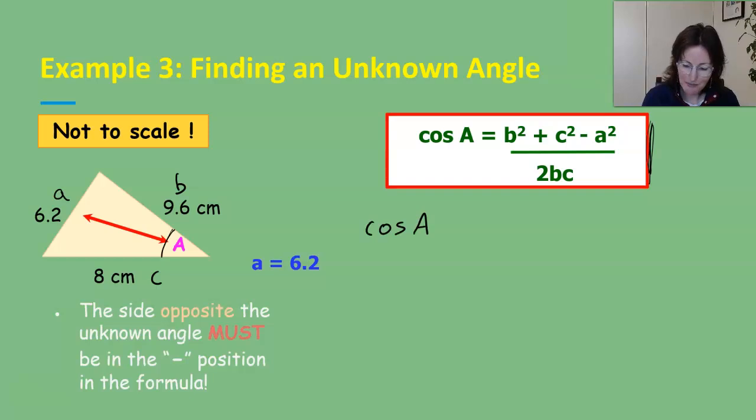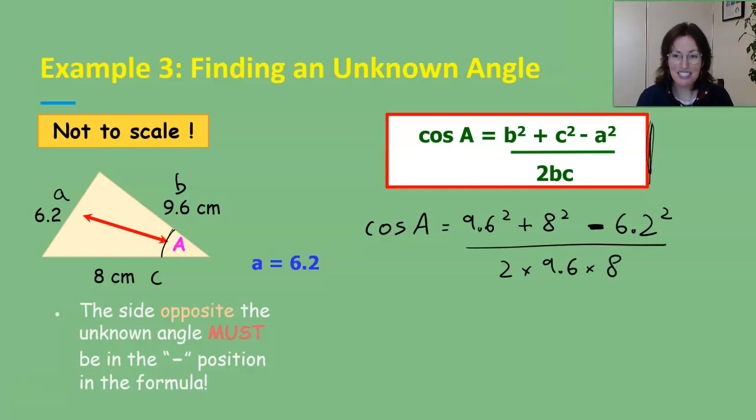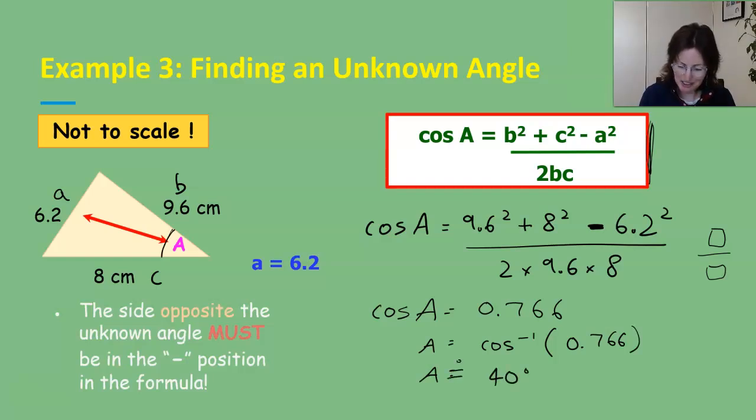So we're finding cos of angle A and that's equal to b squared so 9.6 squared adding 8 squared for side c and then a subtract for the third side which is a the 6.2 and that gets squared as well all over 2 times by b 9.6 times by c which is 8. Again in your calculator I would suggest using the fraction button that looks like this so that you can have the numerator and the denominator clear. That works out to be 0.766 approximately.